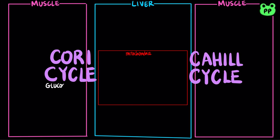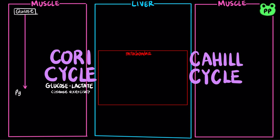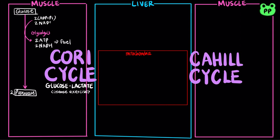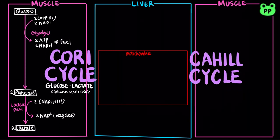The Cori cycle is also known as the glucose-lactate cycle. It occurs during anaerobic or low oxygen conditions, such as during intense exercise. When skeletal muscles are depleted of oxygen, glycolysis becomes the main pathway to generate ATP as an energy source. Pyruvate is reduced to lactate by lactate dehydrogenase in order to regenerate NAD+, required for glycolysis to continue. This process is known as fermentation.